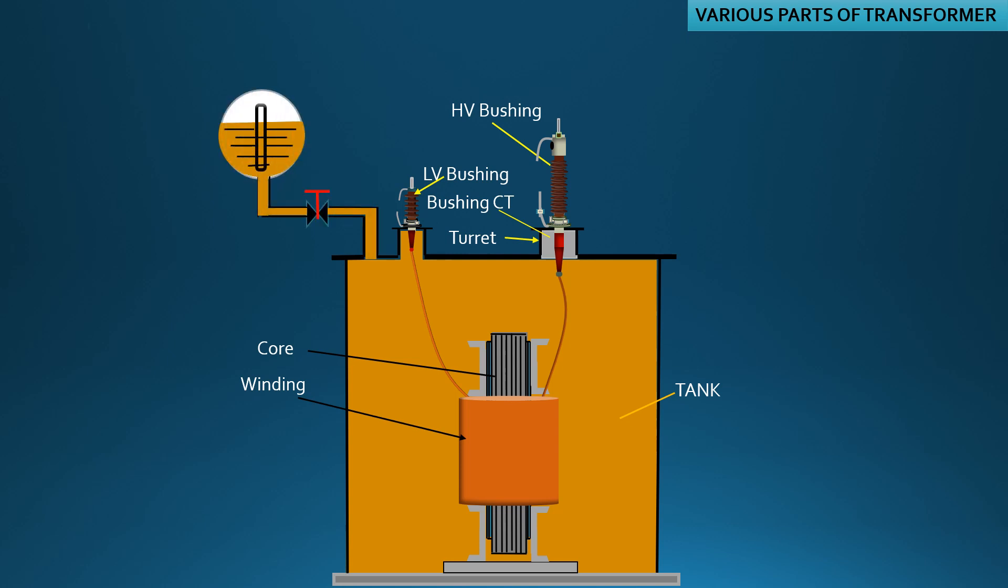This is the conservator tank. It is connected with the main tank through pipelines and a relay called the Buchholz relay. Transformer oil from the main tank reaches the conservator tank and becomes stored here.